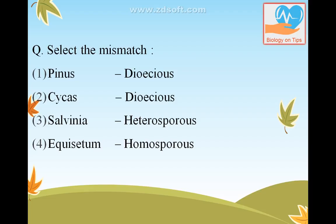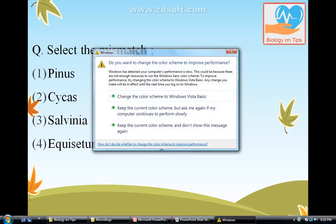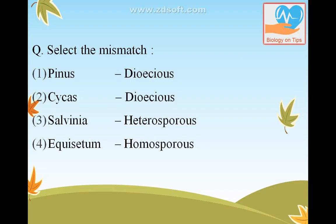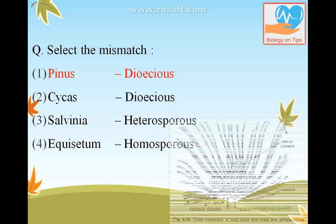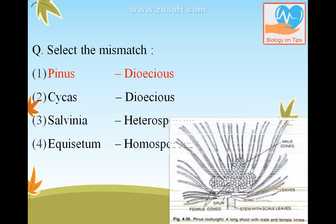Select the mismatch. The answer is Pinus — Pinus is not dioecious, it is a monoecious plant. It contains the male cone and the female cone on the same stem. You can see in the diagram the male cone and female cone present on the same plant.